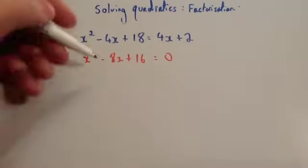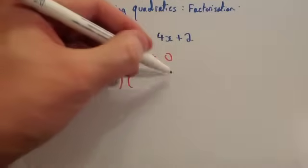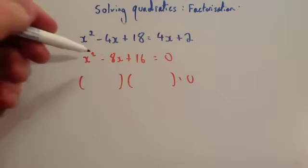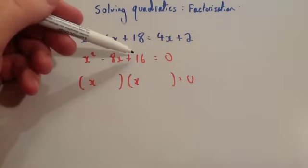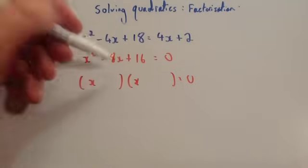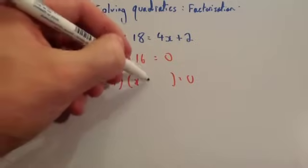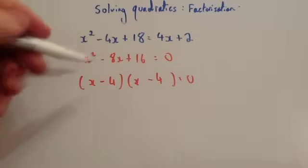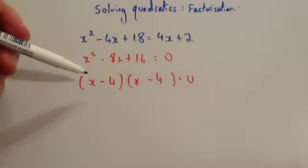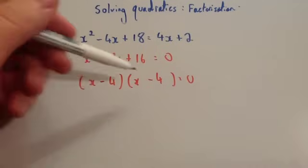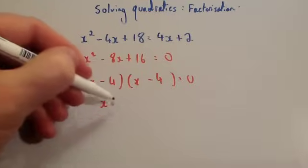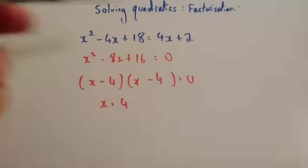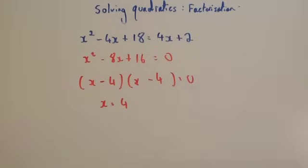Factorise x squared minus 8x plus 16 equals zero: the two numbers multiply to give 16 and add to give minus 8, so it's minus 4 and minus 4. So you get (x minus 4)(x minus 4) equals zero. Notice both brackets are the same, so x equals 4 for either bracket. This quadratic has only one solution — a repeated solution — x equals 4.